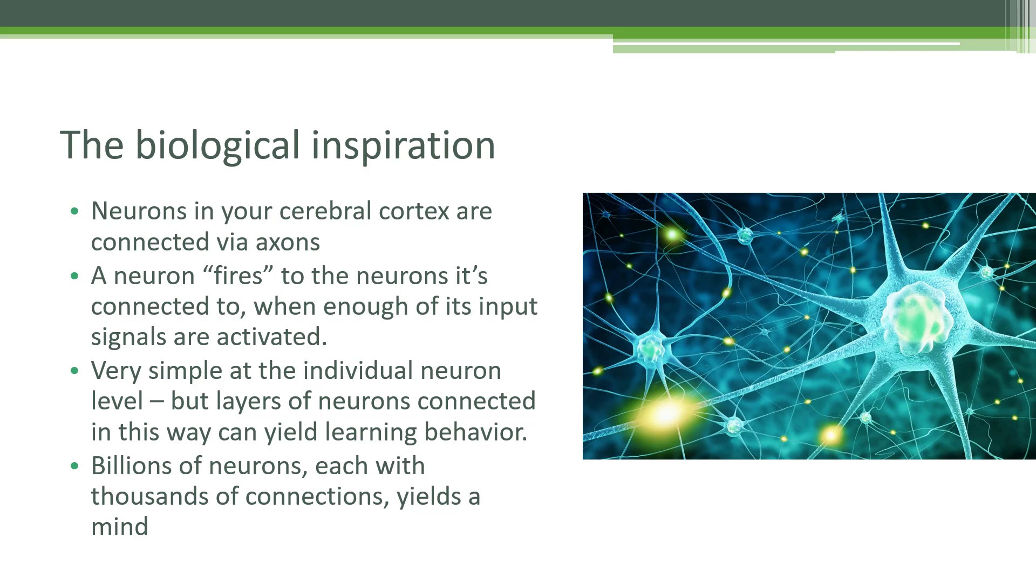But when you start to have many, many of these neurons connected together in many different ways with different strengths between each connection, things get very complicated. This is the definition of emergent behavior. You have a very simple model, but when you stack enough of them together, you can create very complex behavior. This can yield learning behavior, and it actually works in our computers as well.